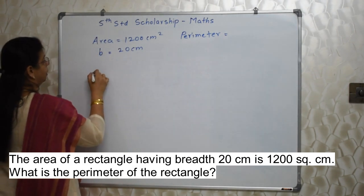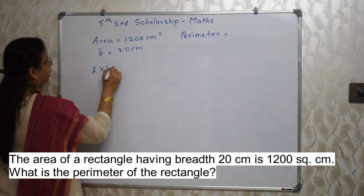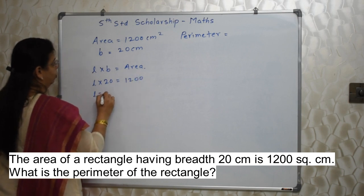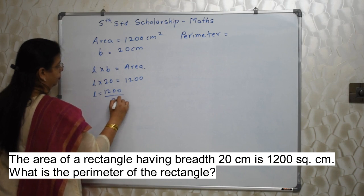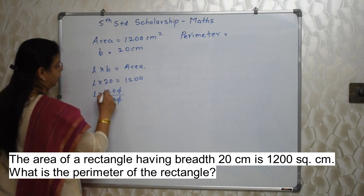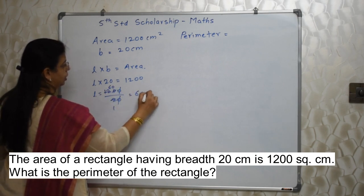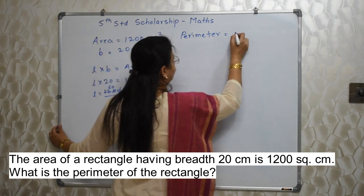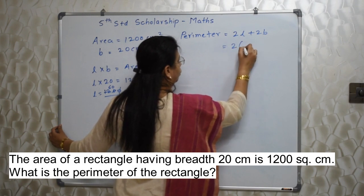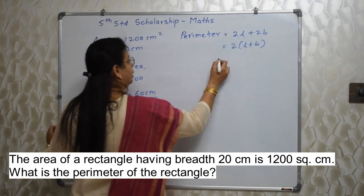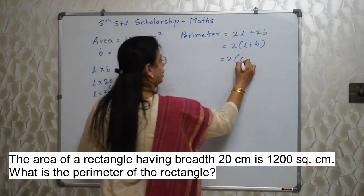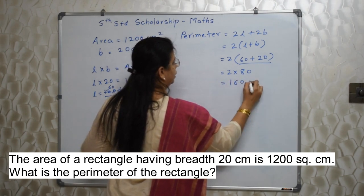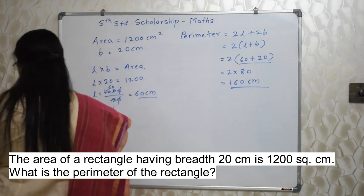So let's find out the length first. Length × breadth = area, so length × 20 = 1200. Length = 1200 ÷ 20 = 60 centimeter. Now we know both length and breadth. Perimeter formula: 2 × (length + breadth) = 2 × (60 + 20) = 2 × 80 = 160 centimeter. This is the perimeter of that rectangle.